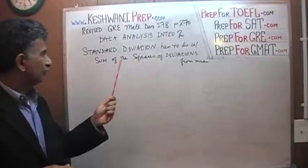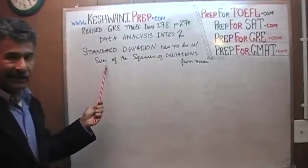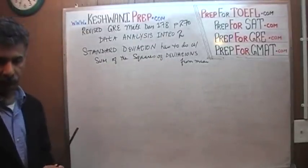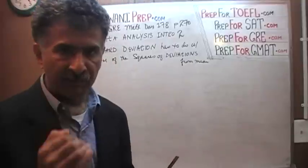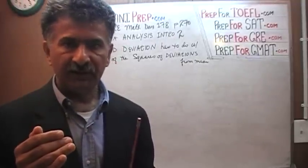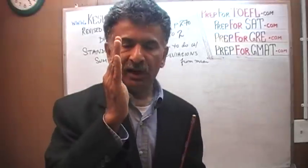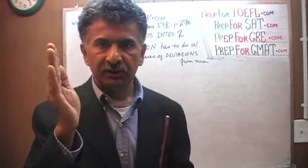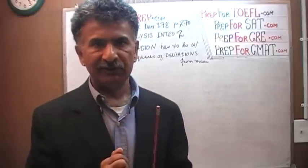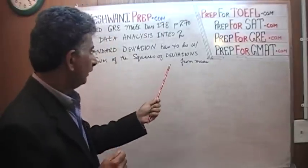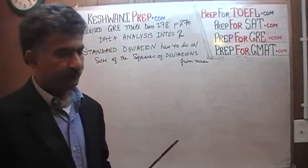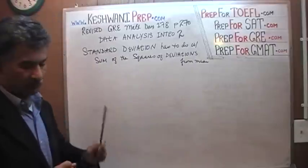Standard deviation has to do with adding up the squares of the deviation from the mean. First we have to figure out the average of all the observations. Once we have the average, we ask how much does each observation deviate from the mean — that's called deviation from the mean. And once we have the deviations from the mean, we square them.